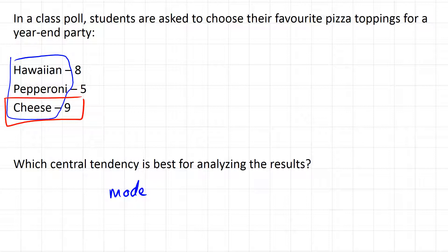It doesn't mean you can't buy the other ones, but you should definitely make sure you have cheese. So when our list isn't numerical and you can't calculate a mean or a median, the mode is going to be helpful.